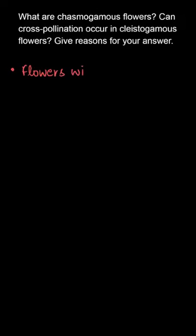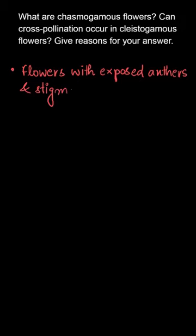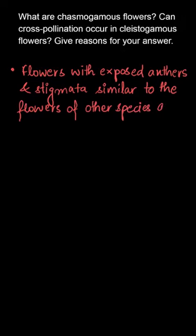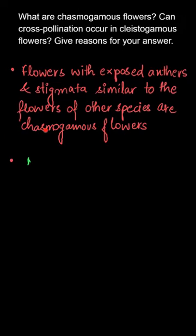In this question, we will discuss chasmogamous flowers and whether cross-pollination is seen in cleistogamous flowers. The flowers with exposed anthers and stigma, similar to the flowers of other species, are called chasmogamous flowers. These are flowers that open at maturity to facilitate exposure of pollen and stigma for cross-pollination.